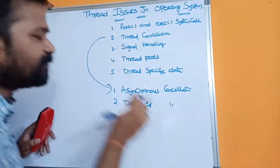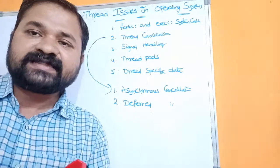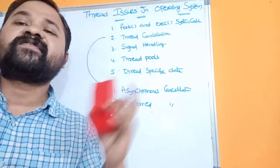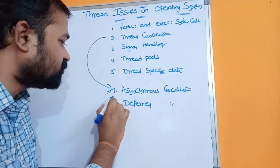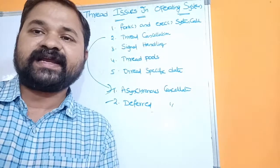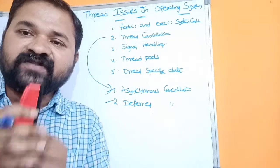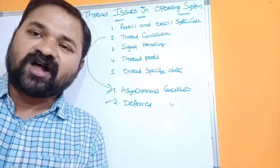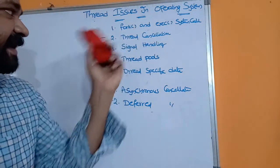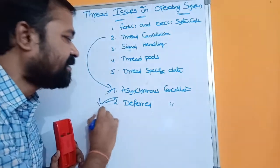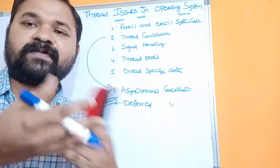Asynchronous cancellation means killing the thread immediately even if that thread is busy with several operations — we do not wait, we kill the thread immediately. The second approach, deferred cancellation, allows the thread to terminate by itself. We give some time to the thread so that it can complete all its operations, and once completed the thread will kill itself. It is better to implement deferred cancellation because the thread can complete its work before terminating.